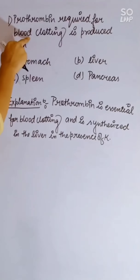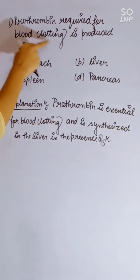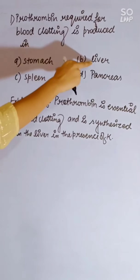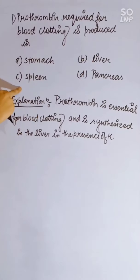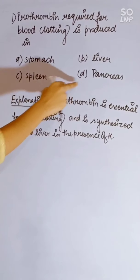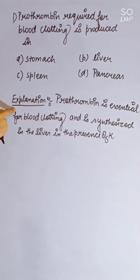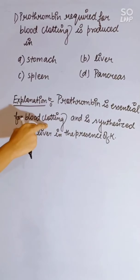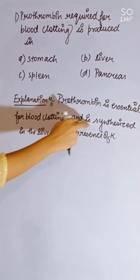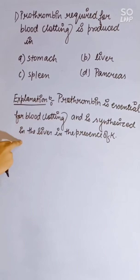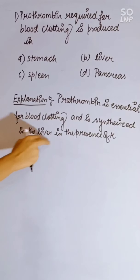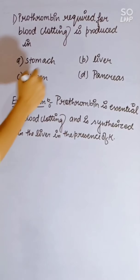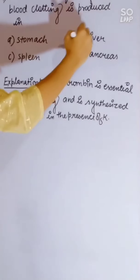Prothrombin required for blood clotting is produced in: stomach, liver, spleen, or pancreas. Prothrombin is essential for blood clotting and is synthesized in the liver in the presence of vitamin K. Correct answer is liver.